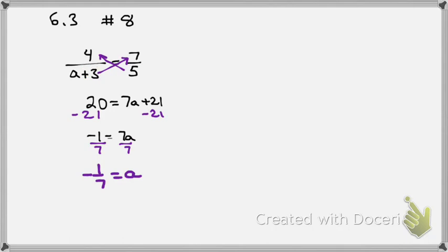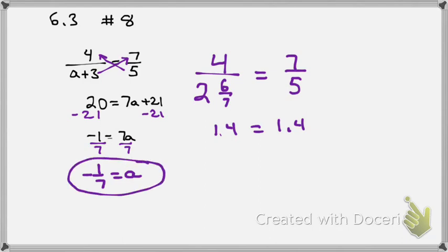And so then if I plugged it in, it would be proportional. So if I went 4 over 2 and 6 7ths, that should equal 7 5ths. So, let's try that. So 4 divided by, let's do that around the world deal. So 7 times 2 is, 7 times 2 is plus 6. So 20 over 7. And that equals 1.4. Now, if I type in my calculator 7 divided by 5, I get 1.4. They're proportional. They equal each other. So this is 1.4, and this is 1.4. They're proportional. I checked my work. Here I solved it, and here I checked it.